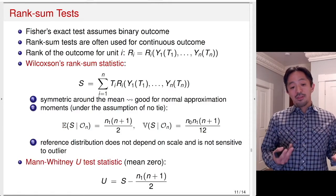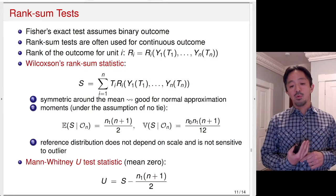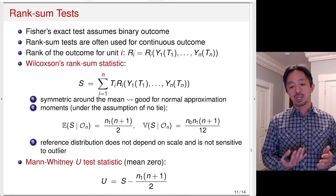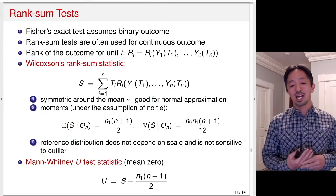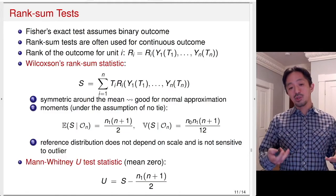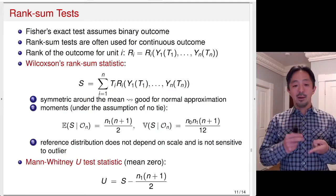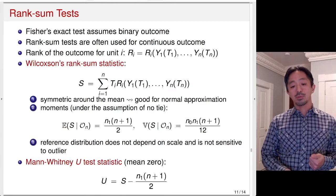A closely related statistic is the Mann-Whitney U-test statistic, which is essentially the same as the Wilcoxon rank sum test statistic but shifted by its mean, so the U statistic has a mean of zero. You can then apply normal approximation or Monte Carlo approximation in the same way.